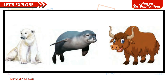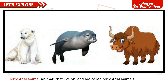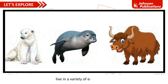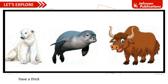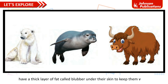Animals that live on land are called terrestrial animals. Land animals live in a variety of environments. Animals that live in polar regions, like polar bears, seals, yaks and penguins, have a thick layer of fat called blubber under their skin to keep them warm.